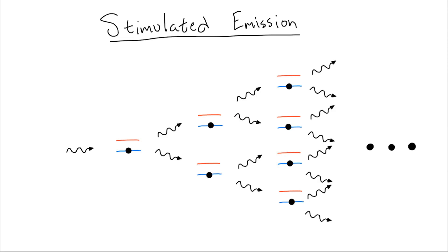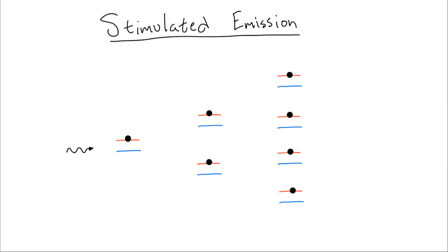But for this cascade to happen, we need almost all of the electrons to be in an excited state. We need a population inversion.